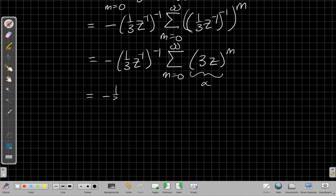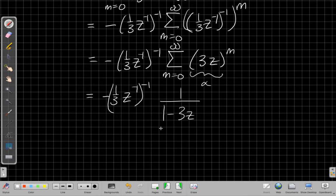Now I'm happy. I've got a sum going from 0 to infinity of something to the m-th power. So again, this would be like my alpha. So I've got minus one-third z to the minus 1, the whole thing to the minus 1. And this becomes 1 over 1 minus 3z. Right, so now, in principle, I have this all worked out.